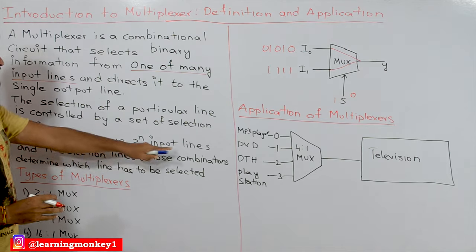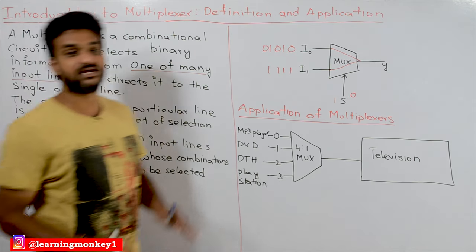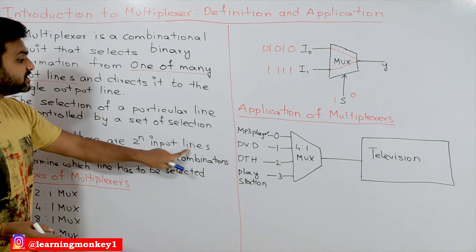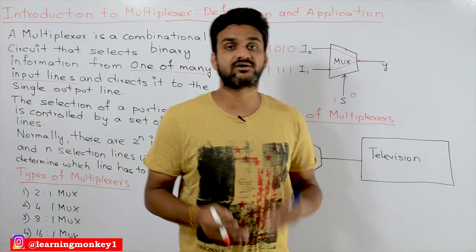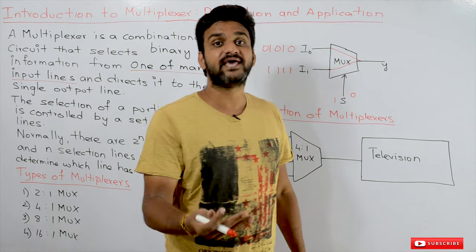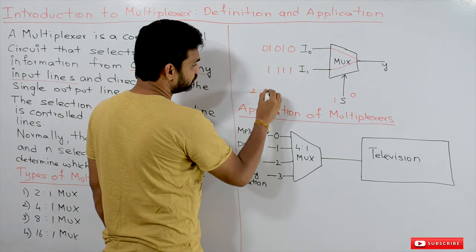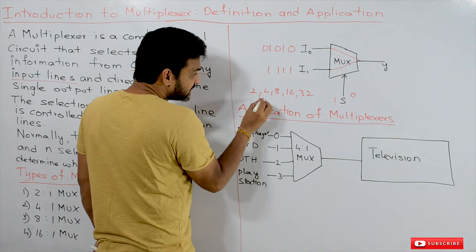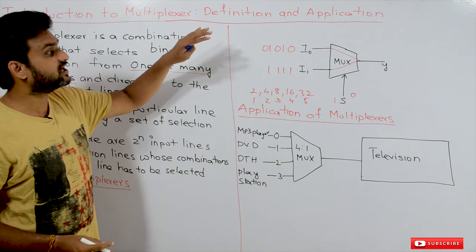Normally, in a multiplexer there are 2^n input lines and n select lines whose combination determines which line has to be selected. So the number of input lines are powers of two — like 2, 4, 8, 16, 32 — and the number of select lines will be 1, 2, 3, 4, or 5 select lines correspondingly.